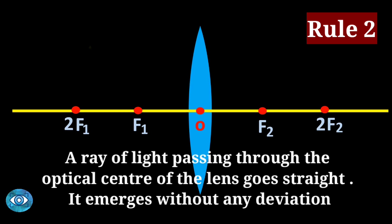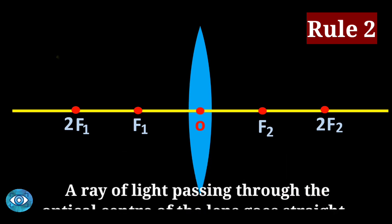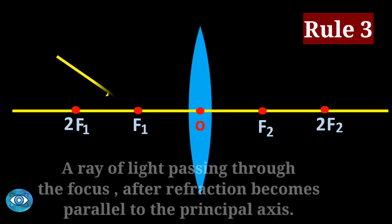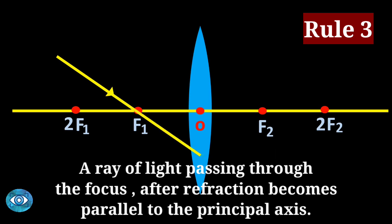Rule number two: a ray of light passing through the optical center of the lens goes straight — it emerges without any deviation. Rule number three: a ray of light passing through the focus, after refraction, becomes parallel to the principal axis.